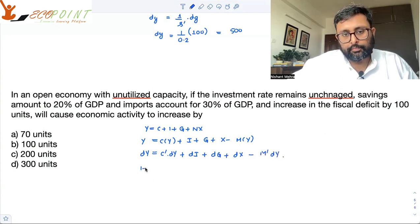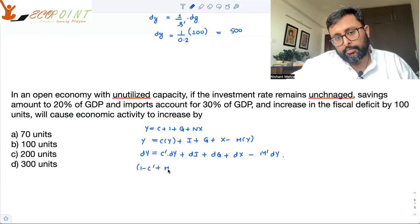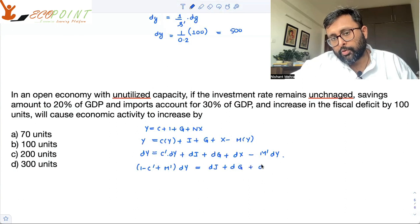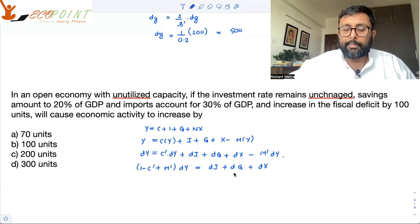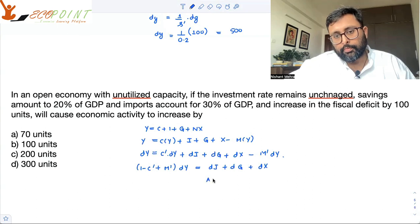dy is 1 minus c dash dy plus dg minus m dy. So I have taken all the like terms together.